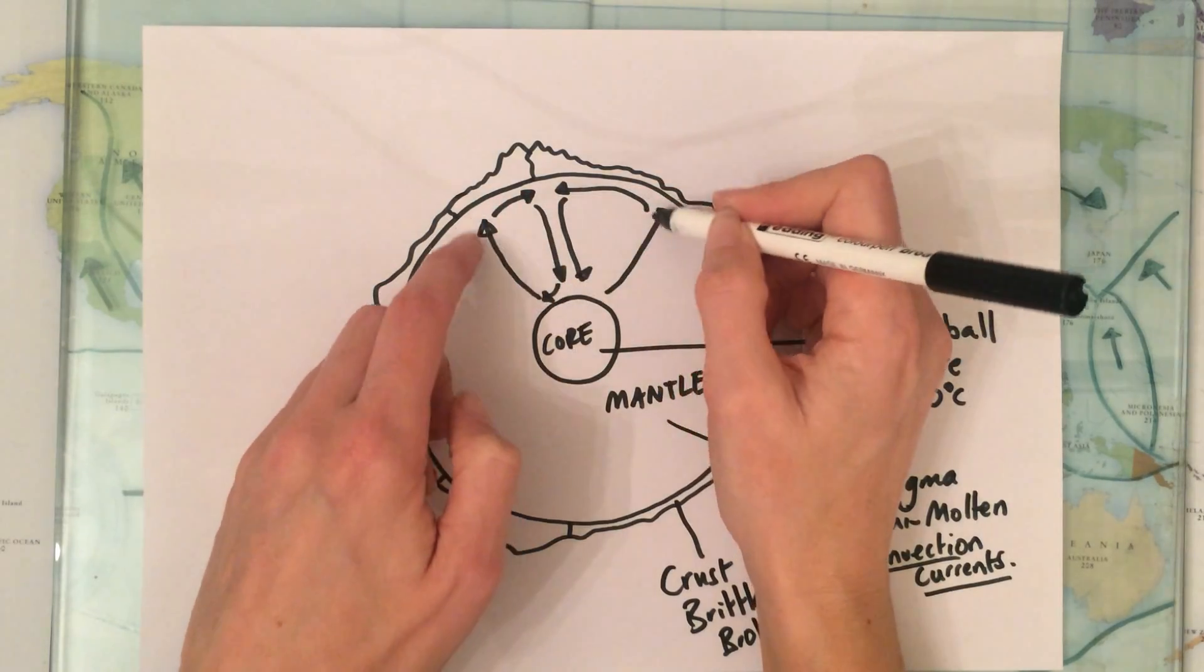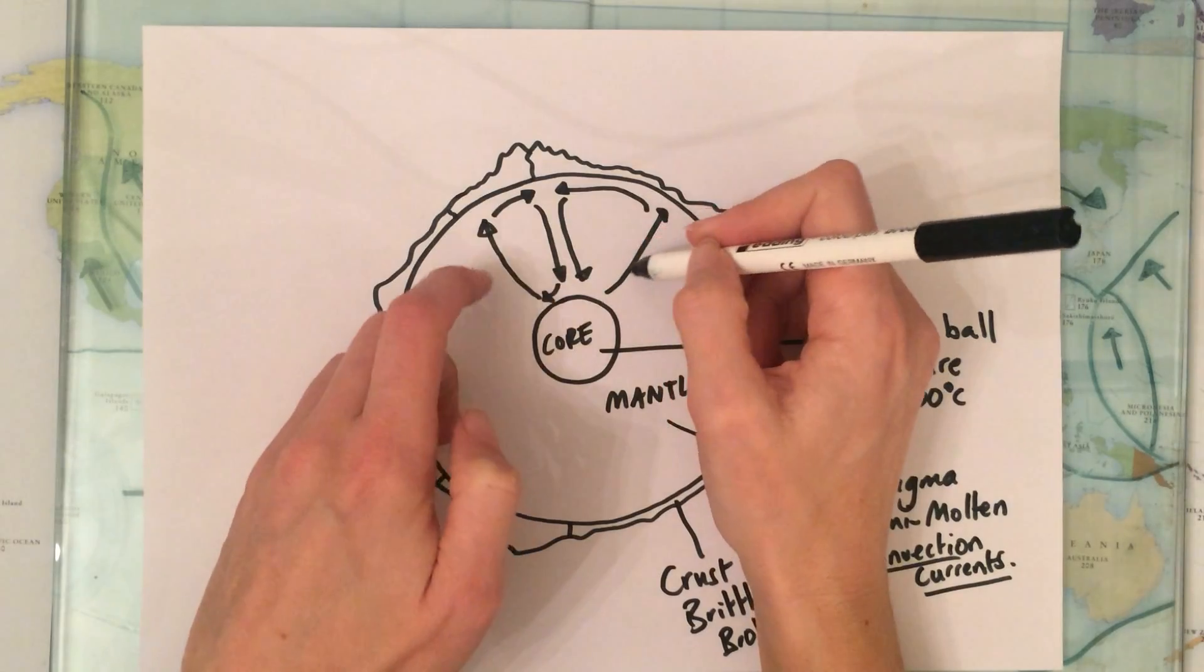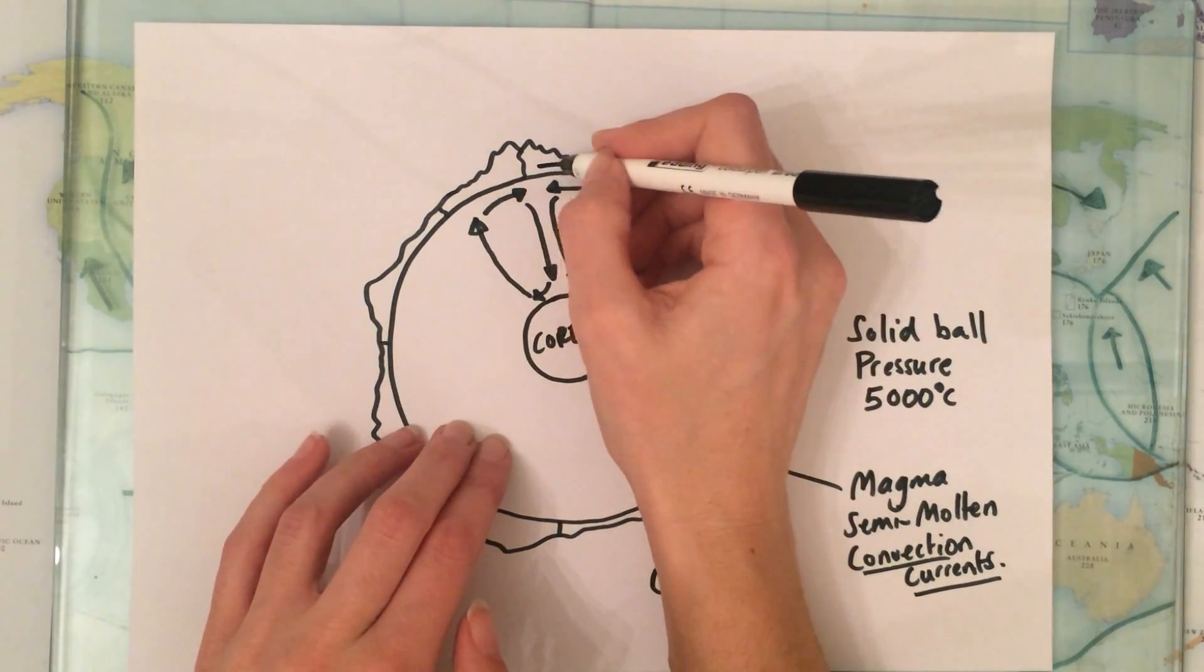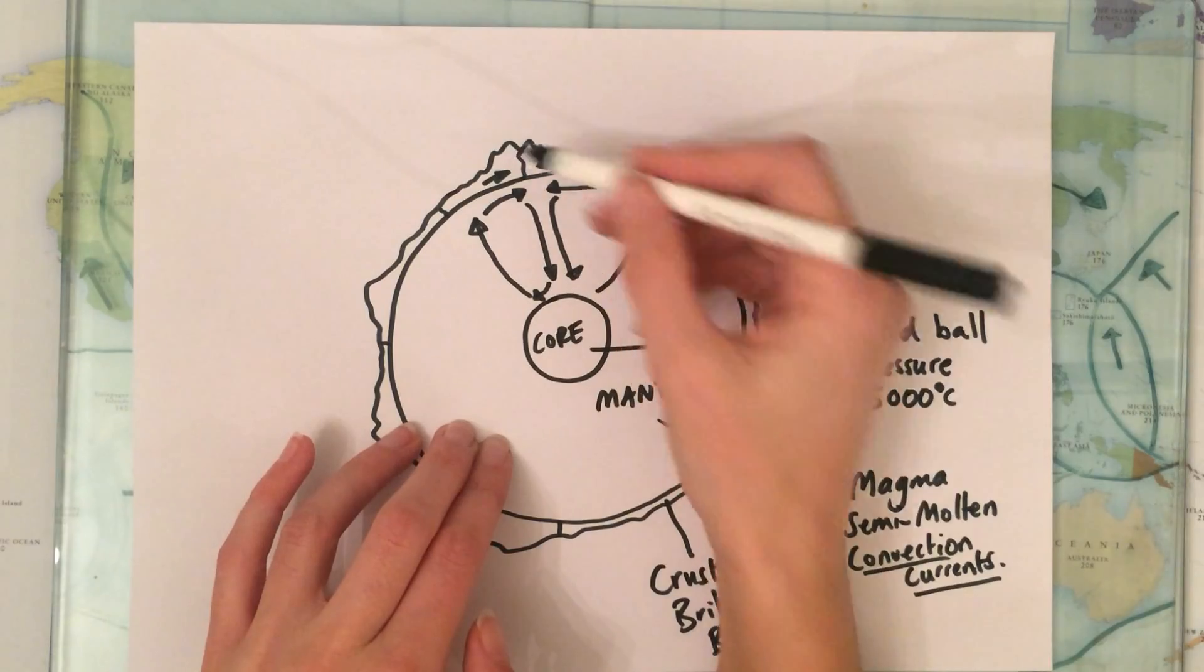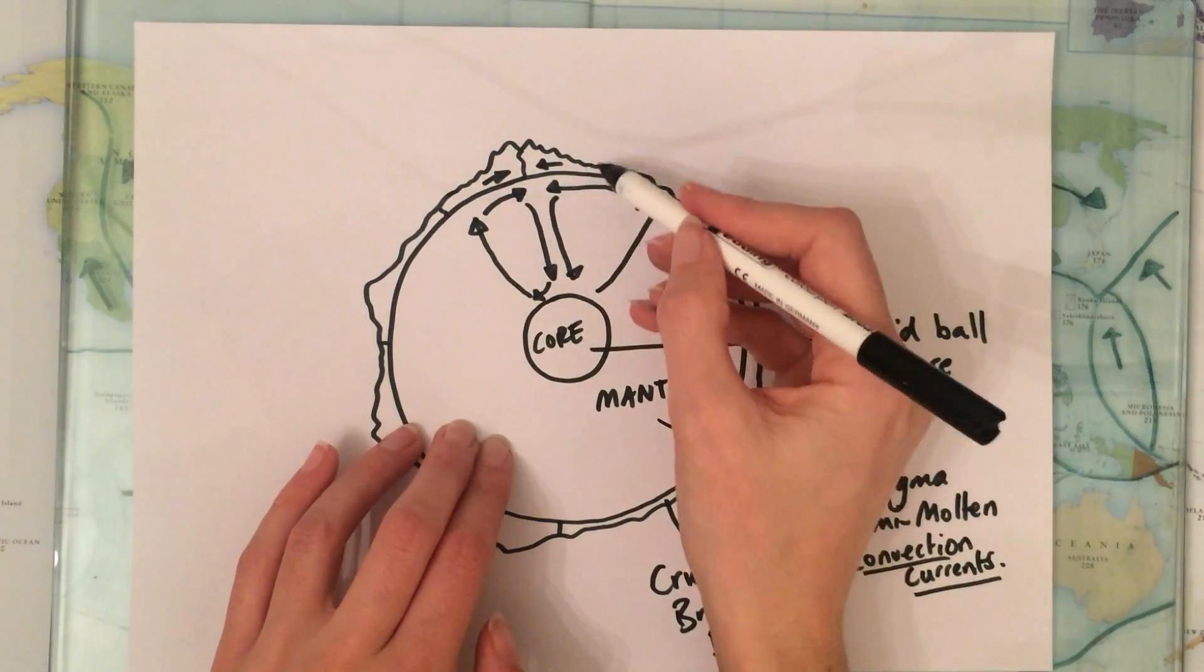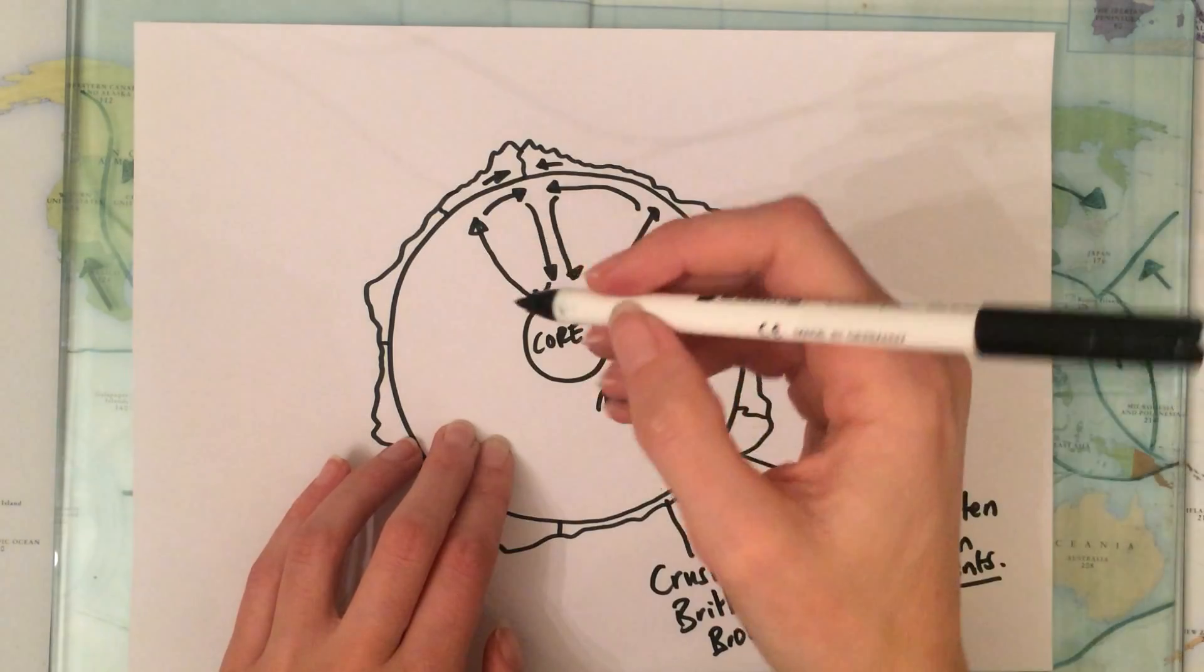Which makes the tectonic plates above move towards each other just like a conveyor belt. And as you can see we've got some mountains being built, this is a good example of plate tectonics.